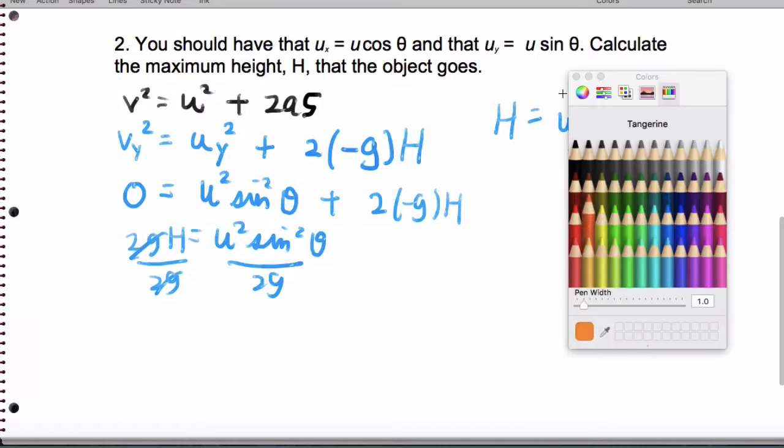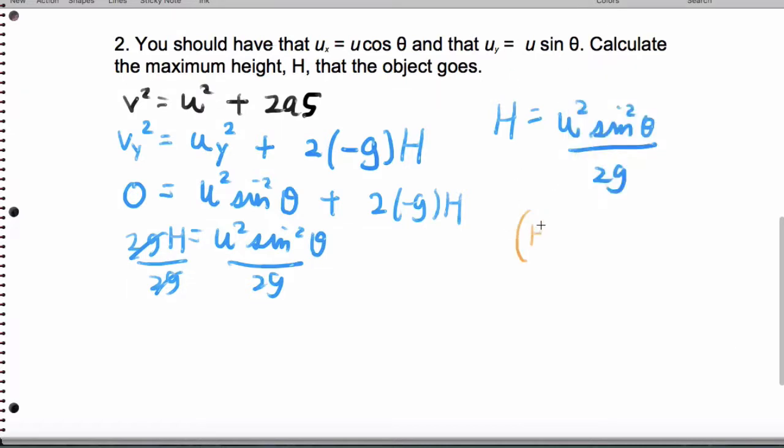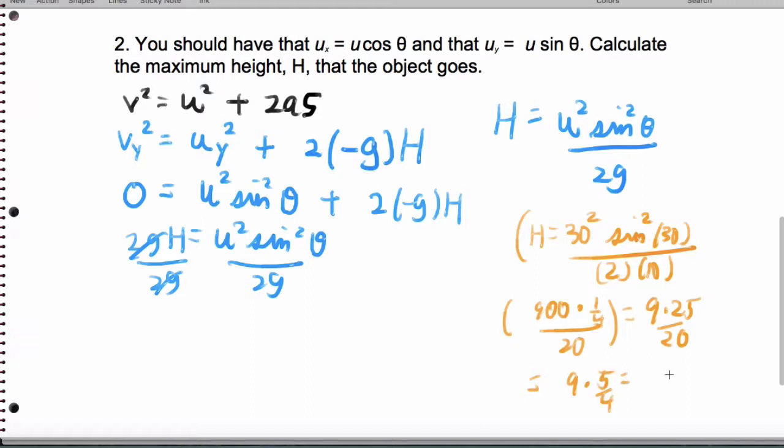Using the example I gave you before, h is 30 squared times sine squared of 30 divided by 2g which is 10. When we solve this, it's going to be 900. Sine of 30 is 1 half, when we square that it's 1 fourth, divided by 20. This is going to be 9 times 25 divided by 20, which is 9 times 5 fourths. That's going to be 45 divided by 4.